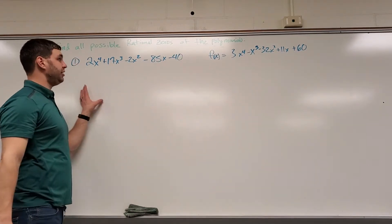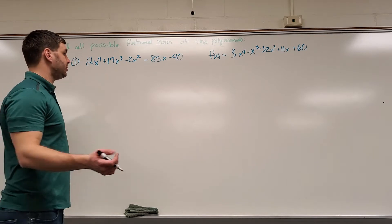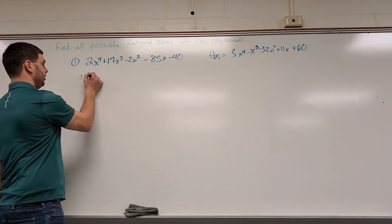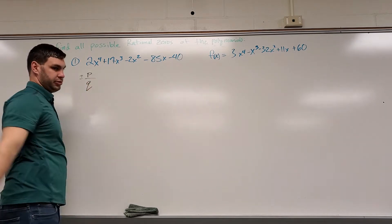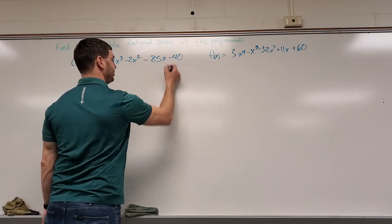Another problem says find all the rational zeros of the polynomial. To do this, remember we need to find plus or minus all of our p's over our q's. The way we find p's and q's: p is going to be the factors of our constant term, and q is going to be all the factors of our leading coefficient.